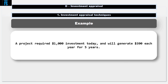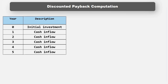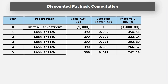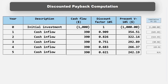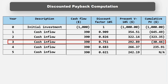For example, suppose a project requires $1,000 investment today and will generate $390 each year for 5 years. The discounted payback period will be calculated as follows: time, cash flow, discount factor — multiply the discount factor by the cash flow to give present value, and work out the cumulative present value as it builds up over time. We can see in this example that the discounted payback period is approximately a little over 3 years.